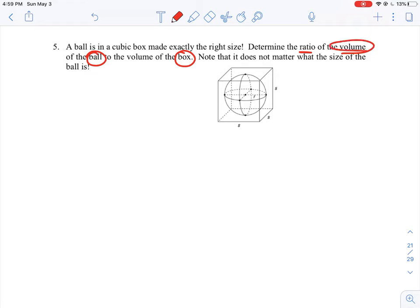We are looking for the ratio of volumes, so we should start out by calculating the volume. We have the ball, so let's look at that first. We know the volume of the ball is given by a formula: four-thirds pi r cubed.